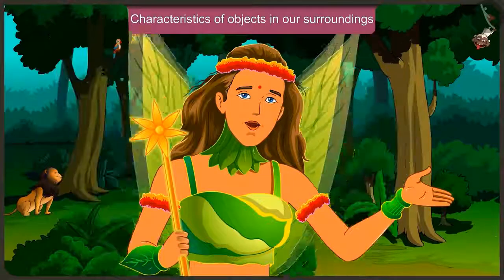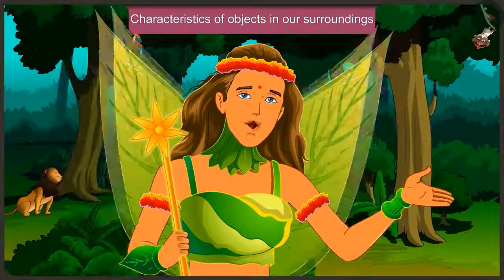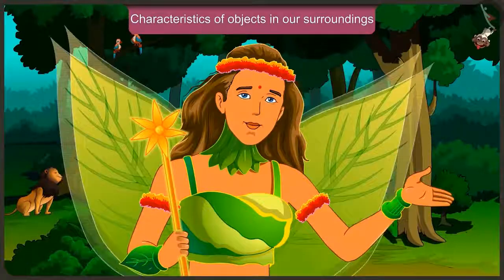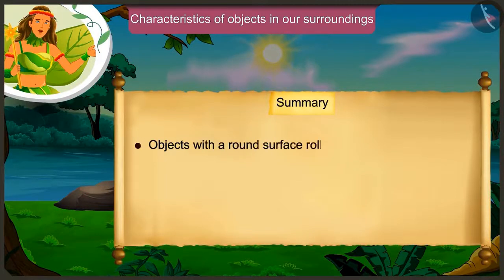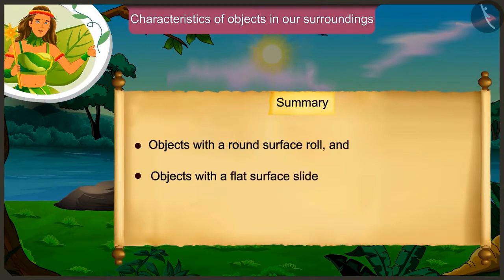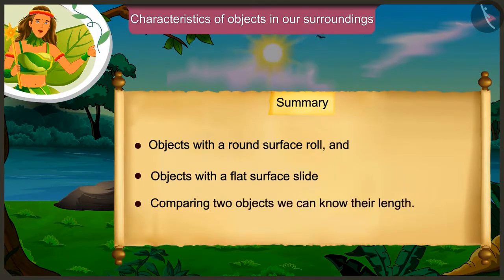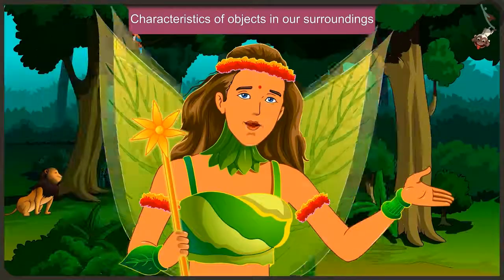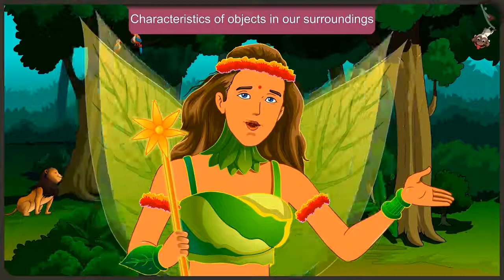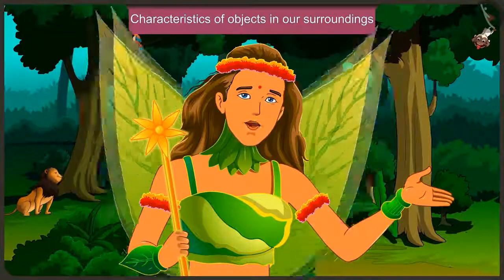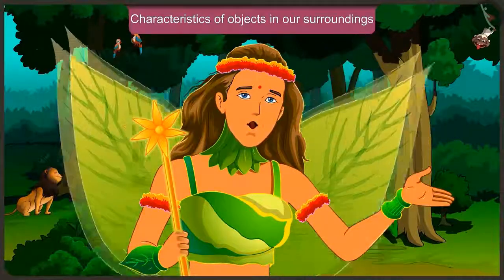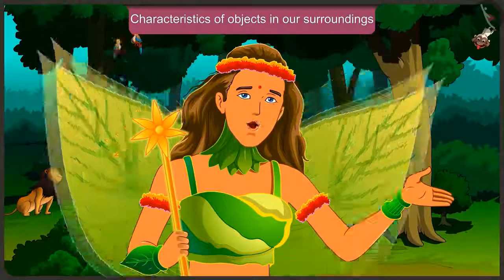Through Appu and Jaggu's conversation, we came to know such things about the objects around us: that objects with a round surface can roll and that objects with a flat surface slide. By comparing two objects, we can find out about their length. You must also try to see such characteristics in the objects around you. In the next video, we will understand the characteristics of the objects around us with some examples.